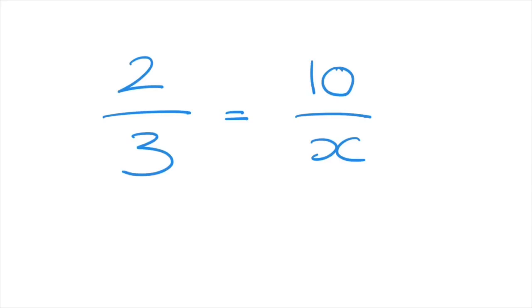Now to do this, the trick is to start from the fraction that we do know, which in this case is 2 thirds, and to compare its numerator, so in this case 2, with the other numerator, which is 10, and to ask ourselves what do we have to multiply or divide 2 by for it to equal to 10.